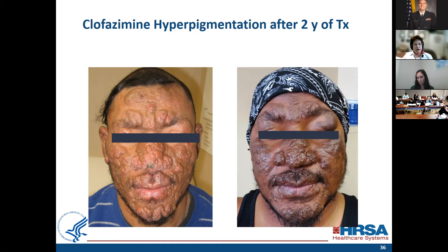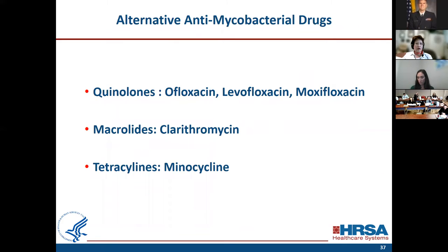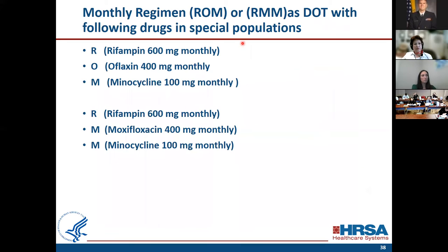We are looking for alternative treatment, and alternative antibiotics are listed on our website. From quinolones, ofloxacin was one of the first and moxifloxacin is the most potent. For macrolides, only clarithromycin — azithromycin is not working — and from tetracyclines, minocycline. The monthly regimen consisting of rifampin, ofloxacin, and minocycline was published over 20 years ago, and you can use the ROM regimen for single-lesion leprosy. There is also evidence that you can replace ofloxacin with moxifloxacin and use monthly doses.